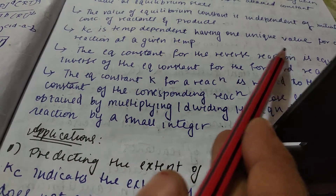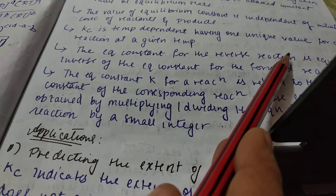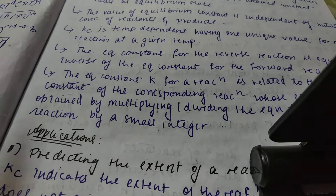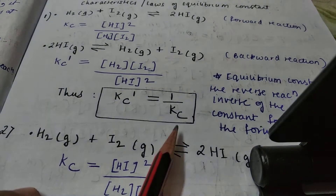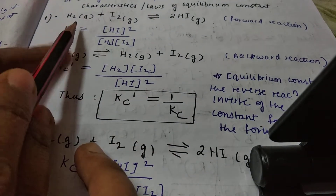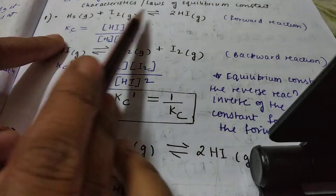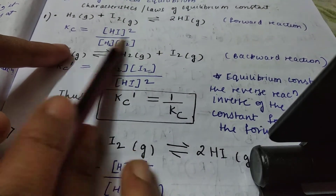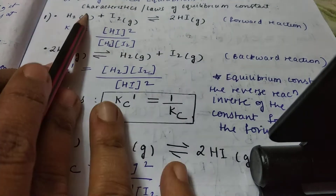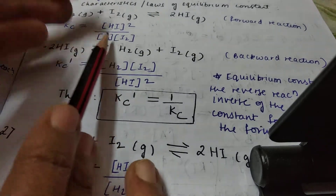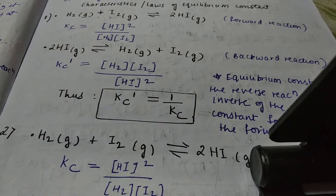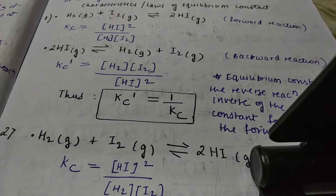The equilibrium constant for the reverse reaction is equal to the inverse of the equilibrium constant for the forward reaction. For the reverse reaction, the equilibrium constant equals 1/Kc of the forward reaction. For example, Kc equals [HI]² / ([H₂][I₂]), and when the reaction is reversed, Kc' equals [H₂][I₂] / [HI]², which gives Kc' = 1/Kc.